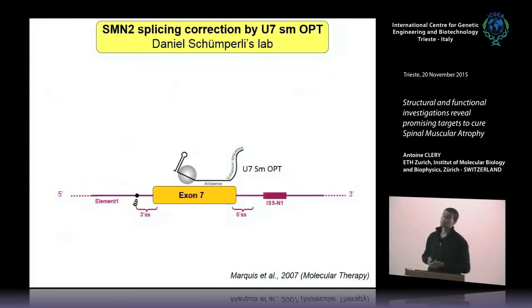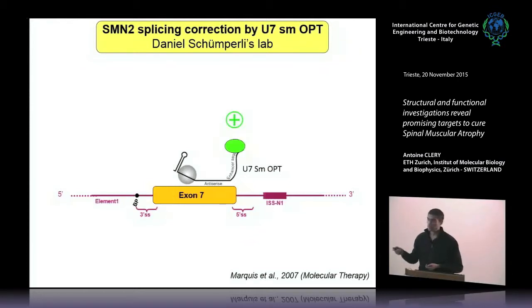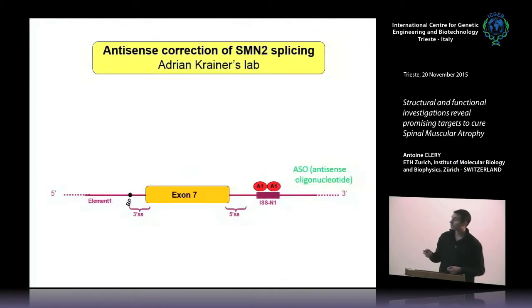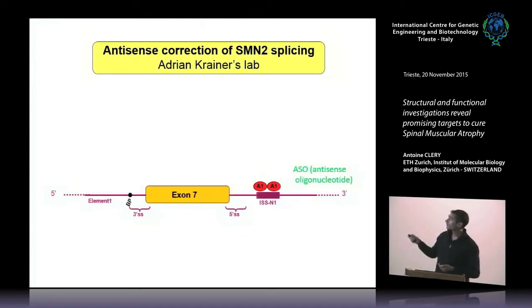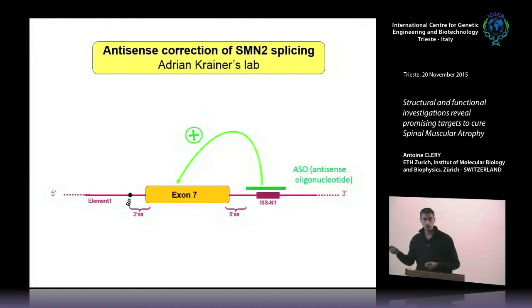Several strategies were developed in different labs. In Daniel Schumperli's lab in Switzerland, they tried using an oligonucleotide complementary to the 3' end of exon 7 with a flanking sequence containing a binding site for a splicing activator, recruiting that activator to improve exon 7 inclusion. In Adrian Krenner's lab in the US, they used an antisense oligonucleotide to prevent recruitment of a splicing repressor, HNRNPA1. If an oligonucleotide binds the repressor's binding site, the repressor can no longer bind and exon 7 inclusion is activated. So you can either recruit an activator or prevent the binding of a repressor.